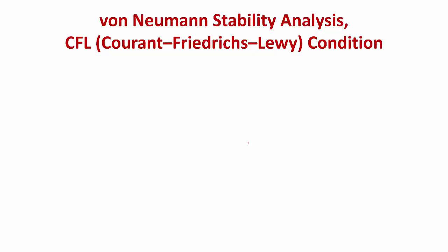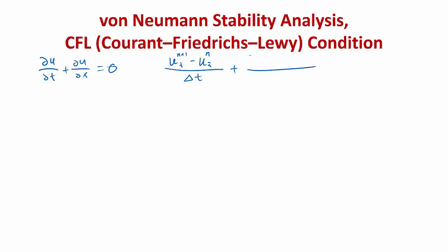Some of you may have done the von Neumann stability analysis. I'm going to illustrate how to do it through an example — discretization of the wave equation: partial u partial t plus partial u partial x equals zero. I'm going to discretize it using central differencing in space and forward order in time. So u of n plus one at grid point i minus u at grid point i at time step n divided by delta t, plus — because I'm using forward order — the spatial discretization is at step n: u i plus one minus u i minus one divided by two delta x equals zero.